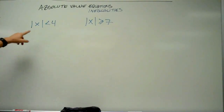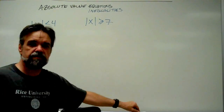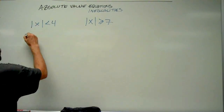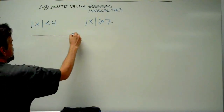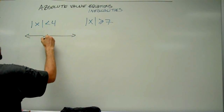Let's look at this example here: the absolute value of x is less than 4. I just want to look at the number line and see what exactly I'm talking about here.